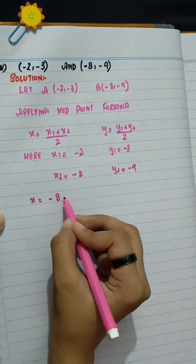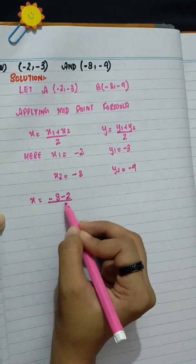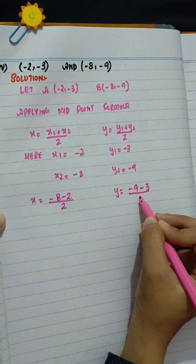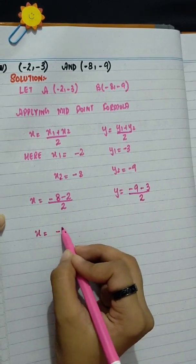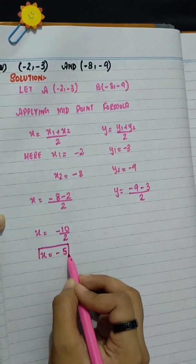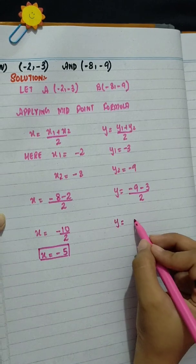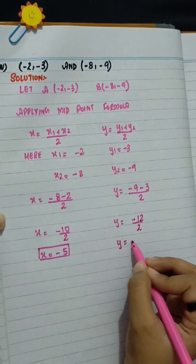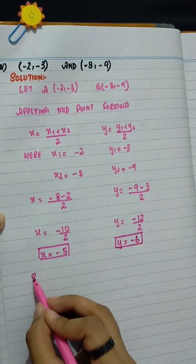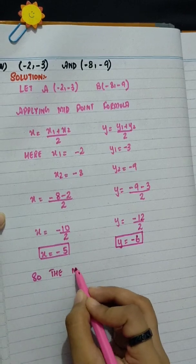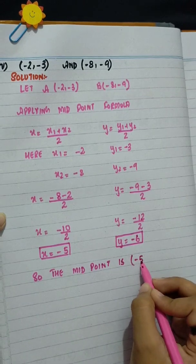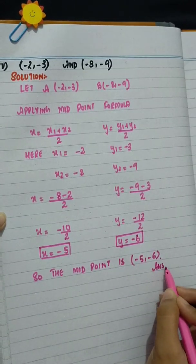x is equal to minus 8 plus minus 2 divided by 2, y is equal to minus 9 minus 3 divided by 2. Minus 10 divided by 2 and x is equal to minus 5. Minus 12 divided by 2 and y is equal to minus 6. So the midpoint is minus 5, minus 6.